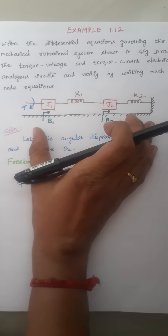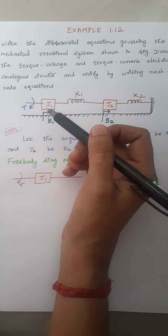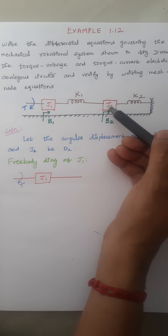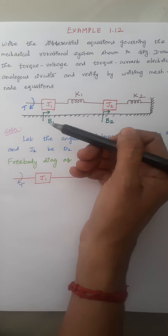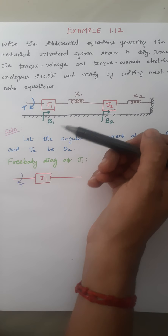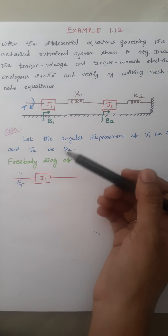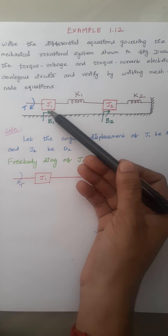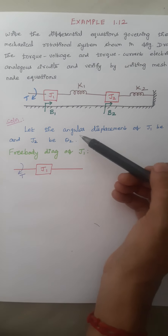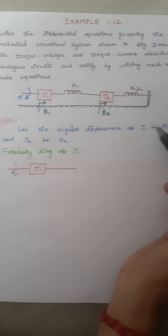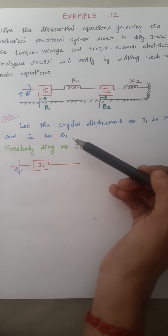This is the given diagram. This diagram consists of two masses with moment of inertia J1 and J2. The displacement of J1 and J2 are not given, so we are considering: let the angular displacement of J1 be theta 1 and angular displacement of J2 be theta 2.